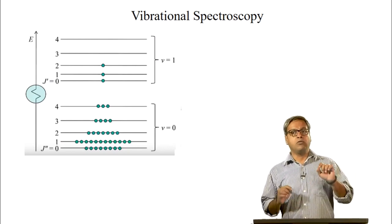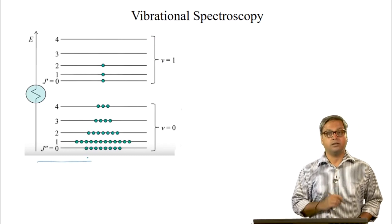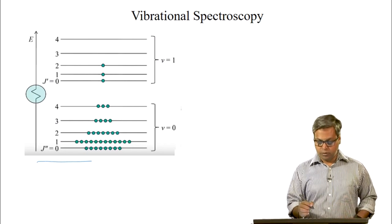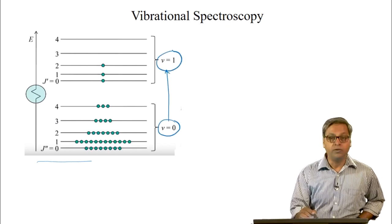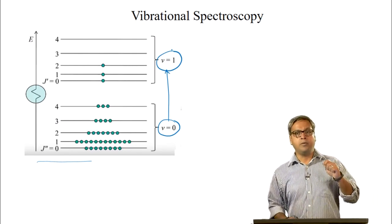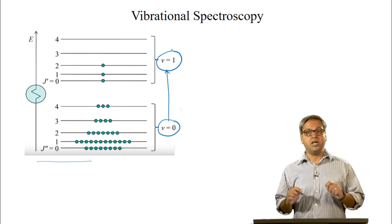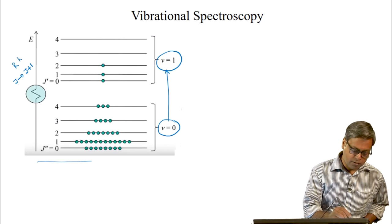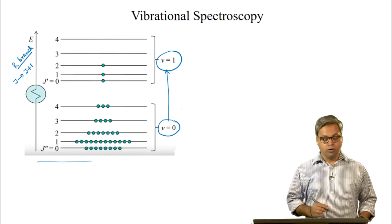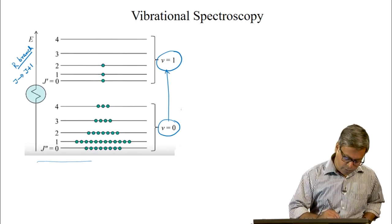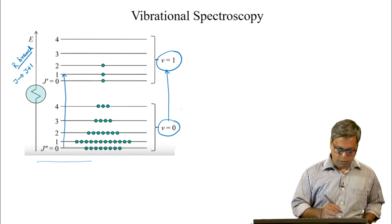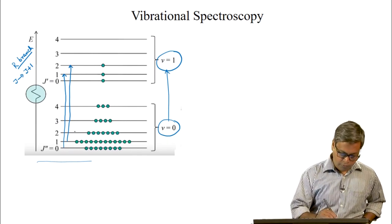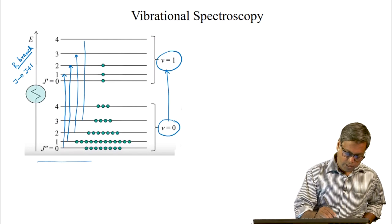Let us rewrite the total ro-vibrational energy as the sum of vibrational energy and rotational energy, but this time using the rotational constant that is dependent on the vibrational state. Let us look into the ro-vibrational energy levels once again — these energy levels are associated with the fundamental band, meaning we are talking about a transition from V equals 0 to V equals 1. For the R branch, J increases by 1, so the transition is from J to J+1. We can draw transitions from V=0, J=0 to V=1, J=1; from V=0, J=1 to V=1, J=2; from 2 to 3; and from 3 to 4.